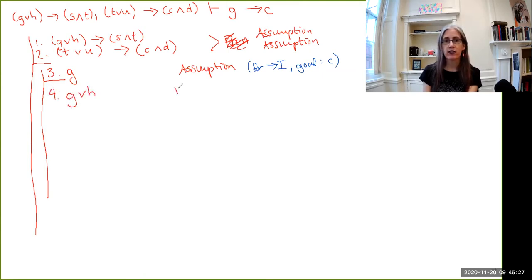So that's just disjunctive introduction on line three. And now between line one where we have a conditional, line four where we have the antecedent of that conditional, through conditional elimination, we can write down the consequence. So that's conditional elimination, lines one and four.